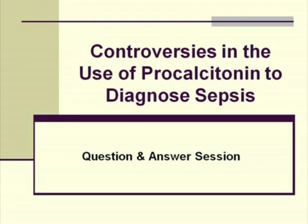Many review articles—and there's one seemingly every month about markers of sepsis or PCT—bemoan the fact that we really don't have a good, clear-cut, objective, quantifiable definition of sepsis, even though the Surviving Sepsis Campaign has been working very hard to find ways to help septic patients. We all recognize this is a really important issue in hospitalized patients, but we don't have a really firm definition. Everybody uses the word a little bit differently.